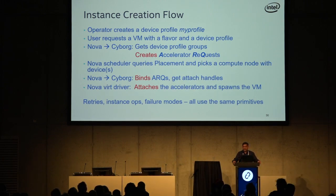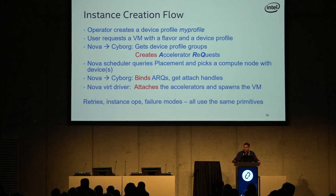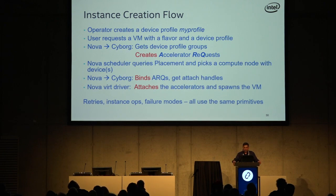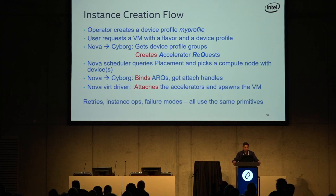As part of that, Cyborg also creates something called Accelerator Request Objects, or ARQs. These are roughly similar to what you would find in Neutron — like a port and a VIF put together, roughly. Essentially, they track the state of a request for an accelerator. As the flow goes between Nova and Cyborg in various stages, the state of an ARQ will change. The terms we use are broadly similar to Neutron: creating an ARQ, subsequently binding it, and attaching it.